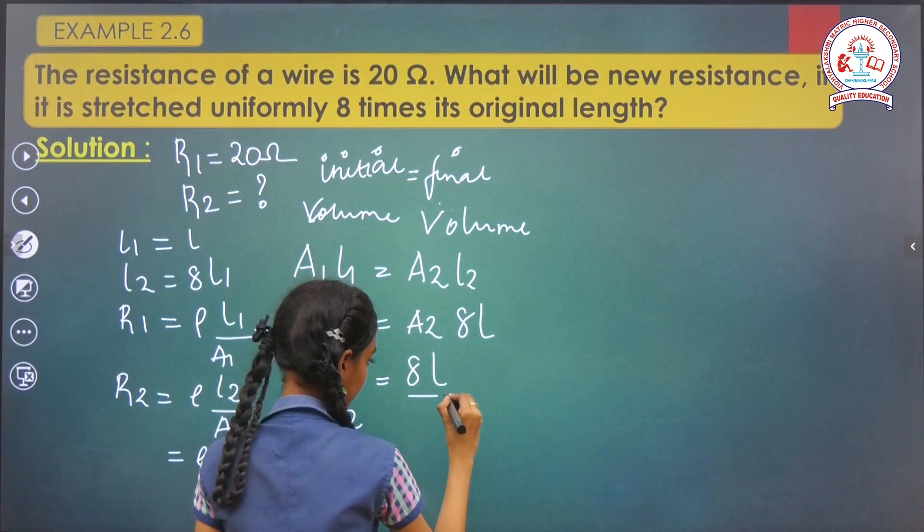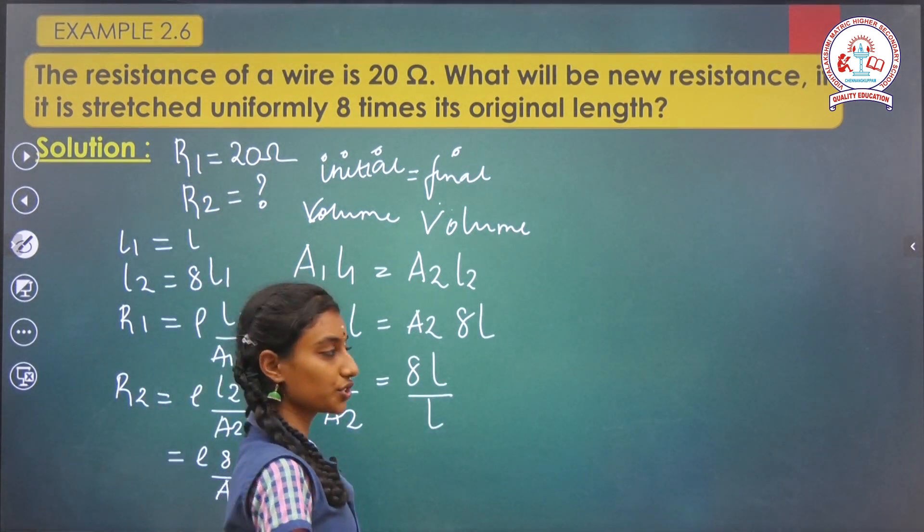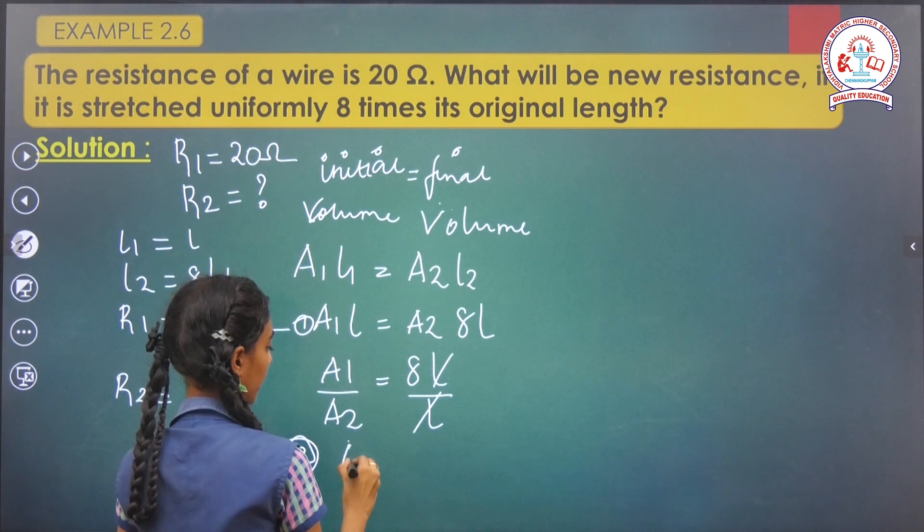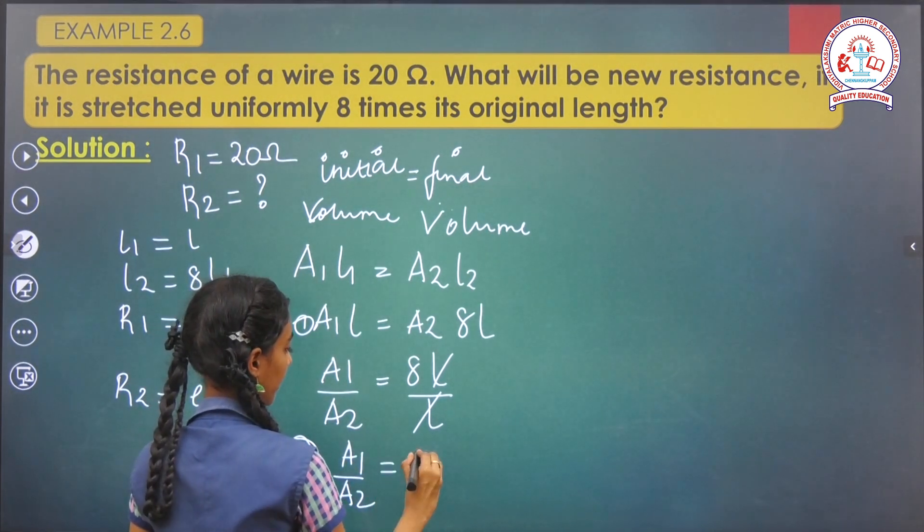Since L2 is 8L, similar terms get cancelled with each other. A1 by A2 equals 8.